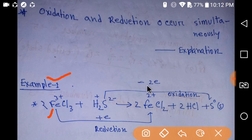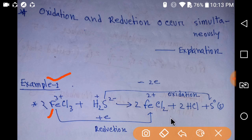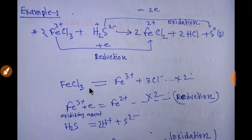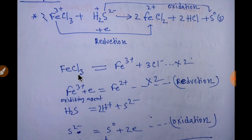On the other hand, this is an oxidation process because in this process the sulfide ion is losing two electrons, and thus this process is called an oxidation process. This sulfide ion is a reducing agent — reducing agents always lose electrons. Now I am going to balance this reaction. Ferric chloride — we can write this compound like this way.